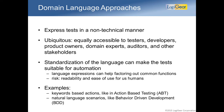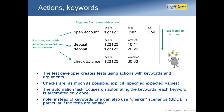The two main examples are keywords — particularly keyword-based actions like in action-based testing — and natural language scenarios like in BDD, which is getting very popular right now. In a keyword test like this, you take it out of a tool into a spreadsheet format. We actually have a tool for this called Test Architect, and that's where my examples will come from. You read the test from top to bottom.